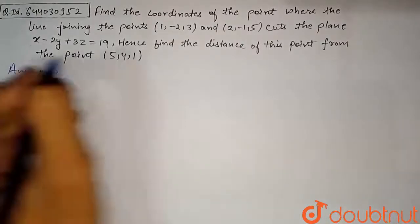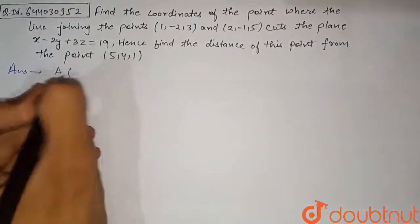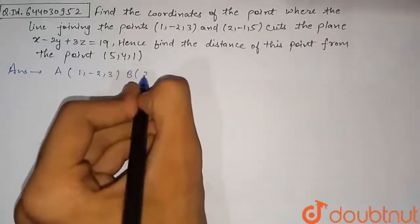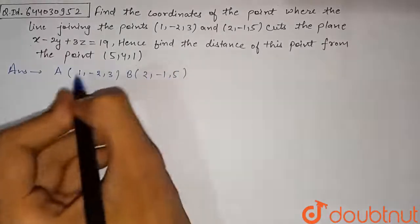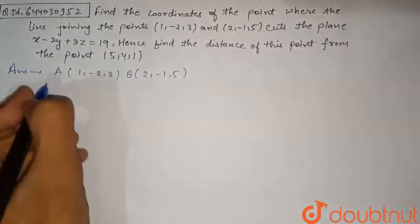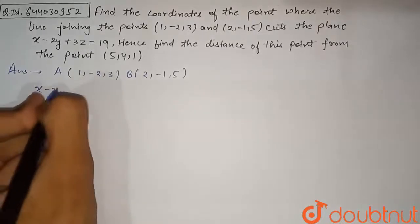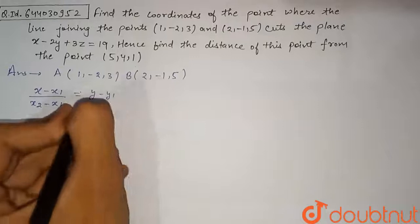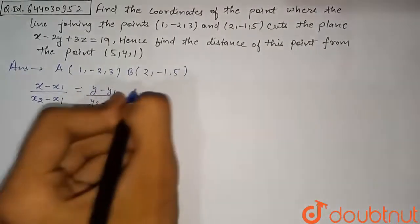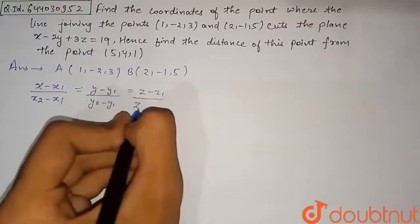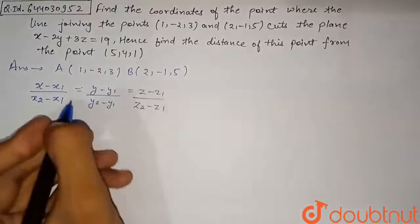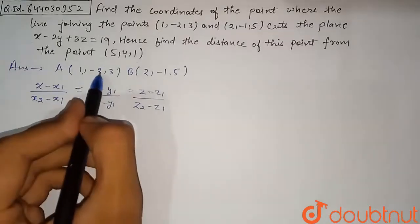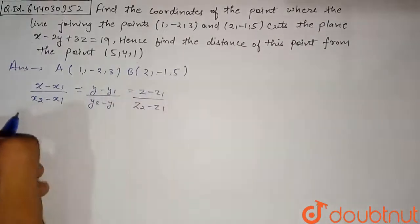Let's begin the solution. First, we find the line joining the two points. Let's name the first point A = (1, -2, 3) and the second point B = (2, -1, 5). To find a straight line in 3D space through two points, the equation is: (x - x₁)/(x₂ - x₁) = (y - y₁)/(y₂ - y₁) = (z - z₁)/(z₂ - z₁). Here A gives us x₁, y₁, z₁ and B gives x₂, y₂, z₂.